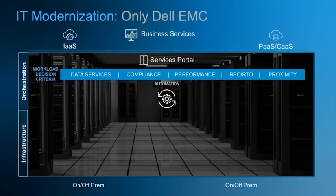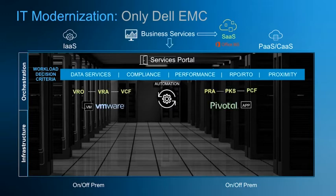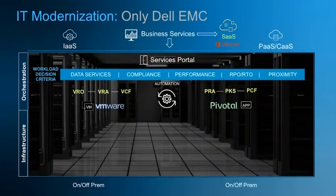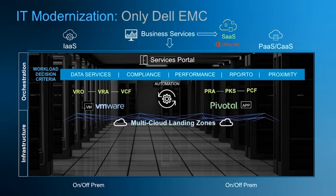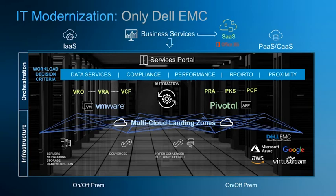Nobody in the market has the portfolio breadth and strength that Dell EMC does. In partnering with consulting, we're going to look at a number of business services that a customer may or may not want to deploy. They may decide some things will run as software as a service. Where they can't, they'll likely come through some sort of service portal or service catalog. Based on data service requirements — compliance, performance, RTO, proximity — they'll move into certain automation workflows. Some will be built from VMware with VRO, VRA, and VMware Cloud Foundation. Some will be built with Pivotal for Pivotal Ready Architectures, Pivotal Container Services, or Pivotal Cloud Foundry.